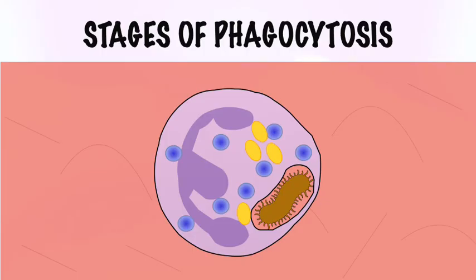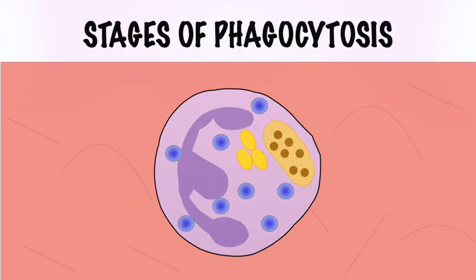A phagolysosome is formed by the fusion of a phagosome with a lysosome, which contains degradative enzymes. The digested material is then eliminated from the phagocyte by the process of exocytosis.